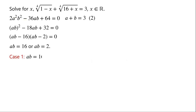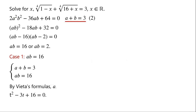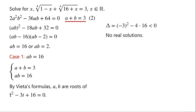Case 1: ab equals 16. From equation 2 we know a plus b equals 3. By Vieta's formulas, a and b are roots of the quadratic t² minus 3t plus 16 equals 0. The discriminant equals (negative 3)² minus 4 times 16, which is less than 0. So the quadratic equation has no real solutions.